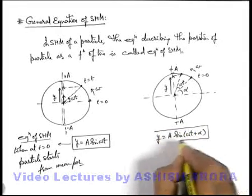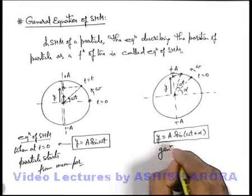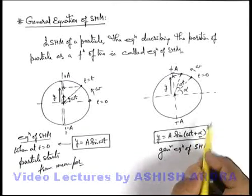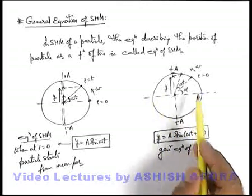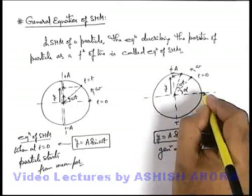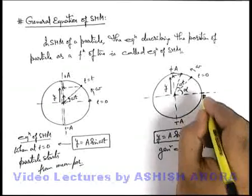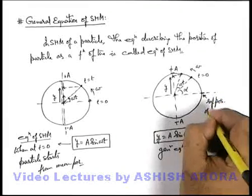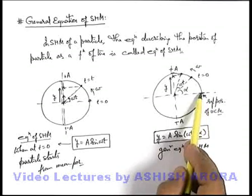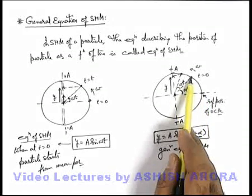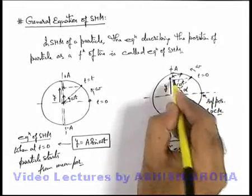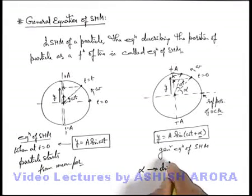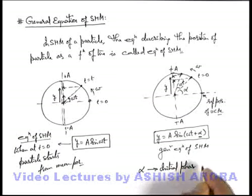This equation we can regard as the general equation of SHM. Here alpha is the initial angle, or the angle at which the particle executing uniform circular motion was located at t equal to zero with respect to the position corresponding to the mean position of SHM. This point corresponding to the mean position of SHM we can call the reference position of uniform circular motion. With respect to the reference position, if at t equal to zero the particle was at angle alpha, then the projection was starting SHM from that position.